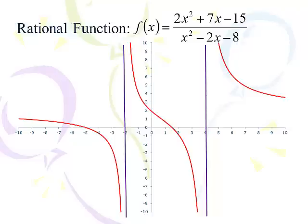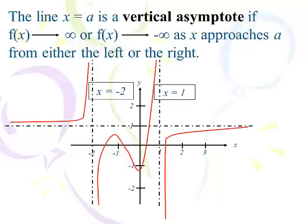Let's first talk about vertical asymptotes, and then we'll talk about horizontal asymptotes. The line x equals something is a vertical asymptote if the function approaches infinity or negative infinity as x gets closer and closer to that value of a, either from the left or the right. You remember this from the tangent function — we had vertical asymptotes at π/2, -π/2, 3π/2, and -3π/2, and the function would approach infinity or negative infinity as it got closer to that vertical line.